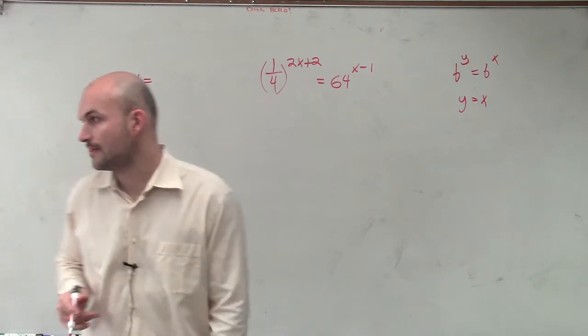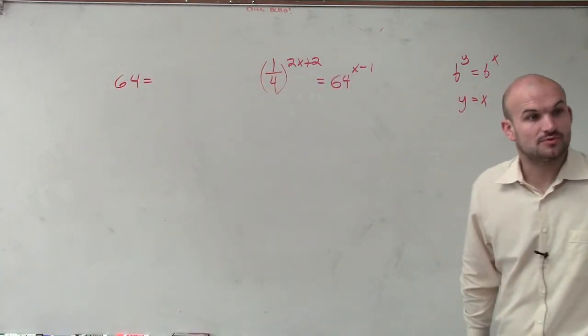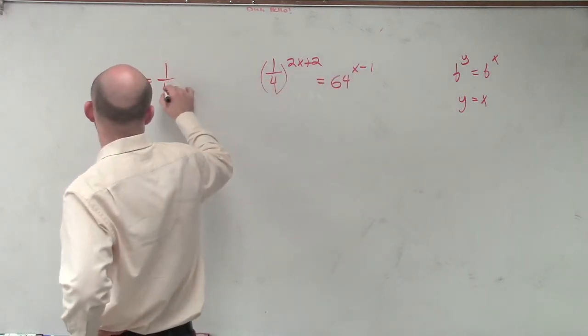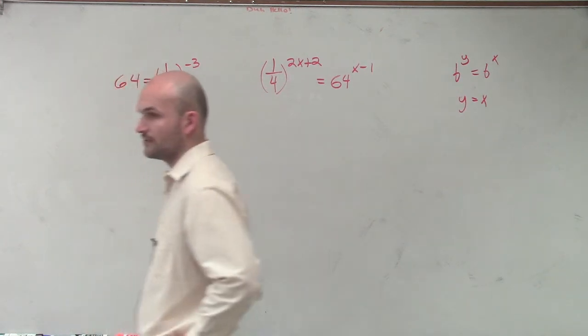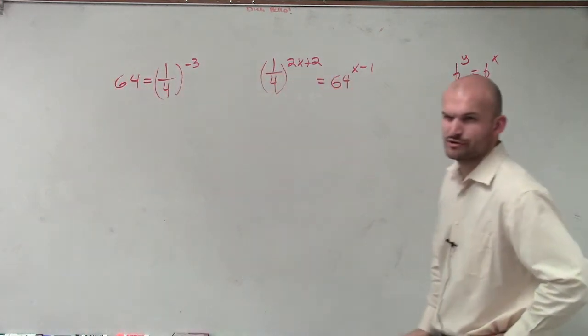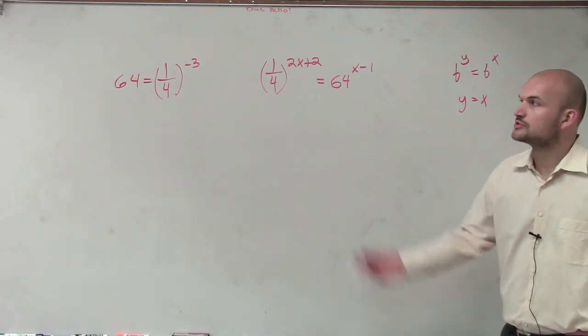1 over 64 is really the same thing as 1 over 4 to the negative third power. Did you guys agree with that? Let's go and apply that.